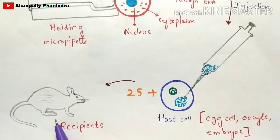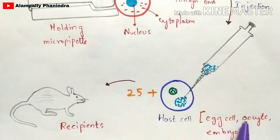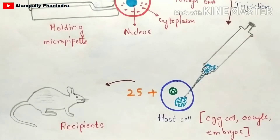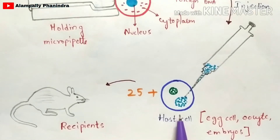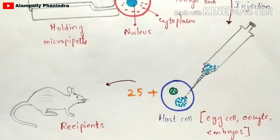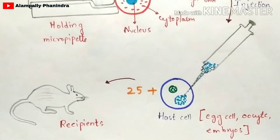Research has been done with positive results. In the case of an oocyte, it is injected into a recipient such that it leads to the production of offspring. If you take embryos directly, they will also lead to the production of offspring without the need for the egg cell stage.